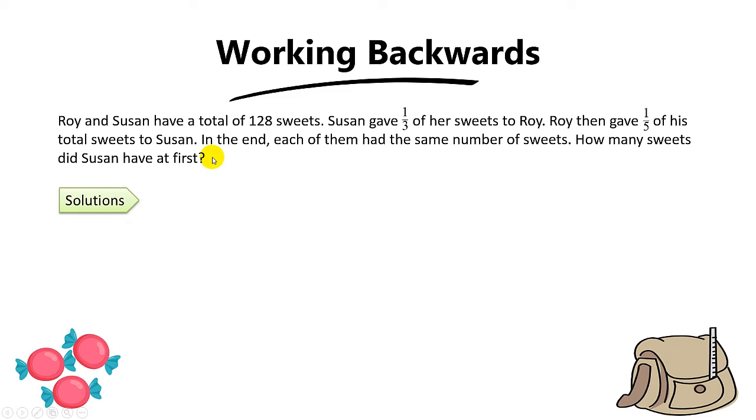So how do we know this question falls under working backwards? That's because you can actually find the number of sweets each of them have in the end.